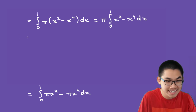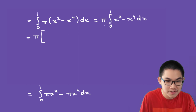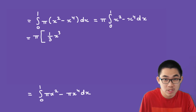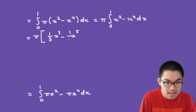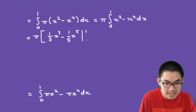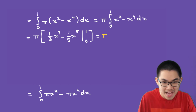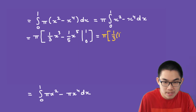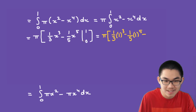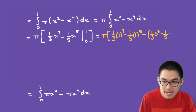This is easy to solve. The antiderivative of x² is 1/3 times x³, and the antiderivative of x⁴ is x⁵ divided by 5. Evaluated from 0 to 1, we substitute: pi times (1/3 times 1³ minus 1/5 times 1⁵) minus (1/3 times 0³ minus 1/5 times 0⁵).